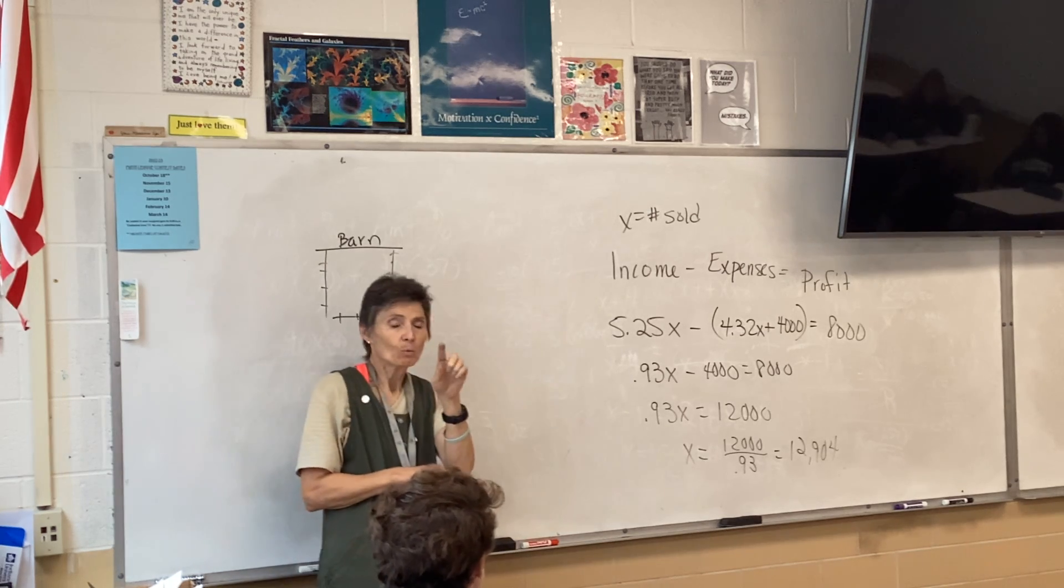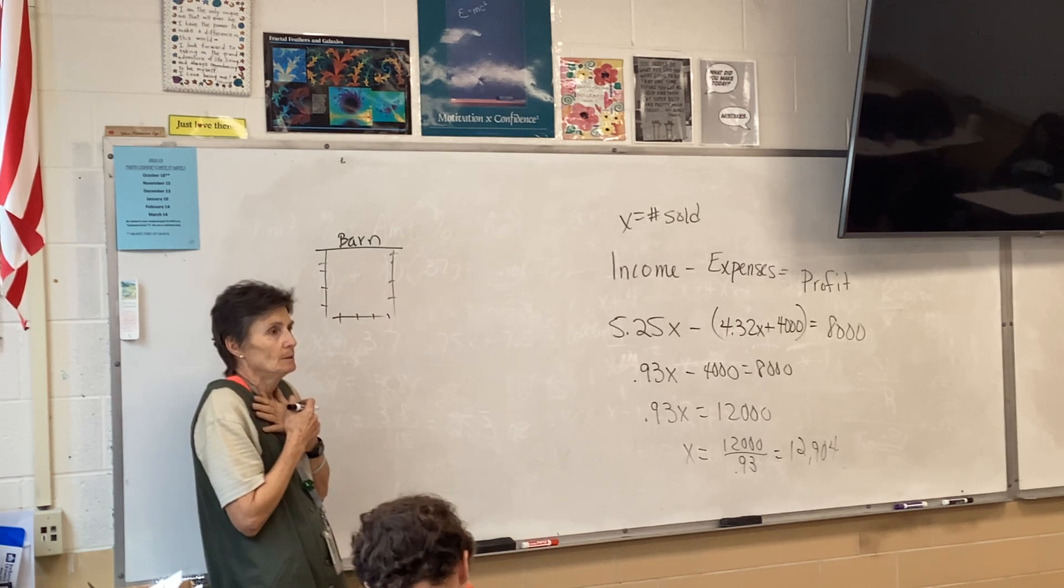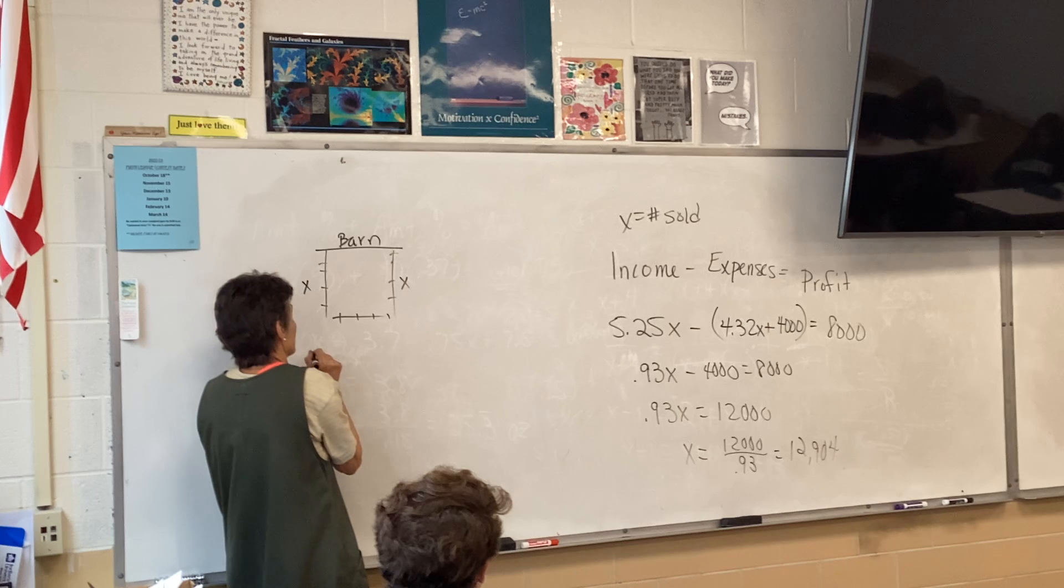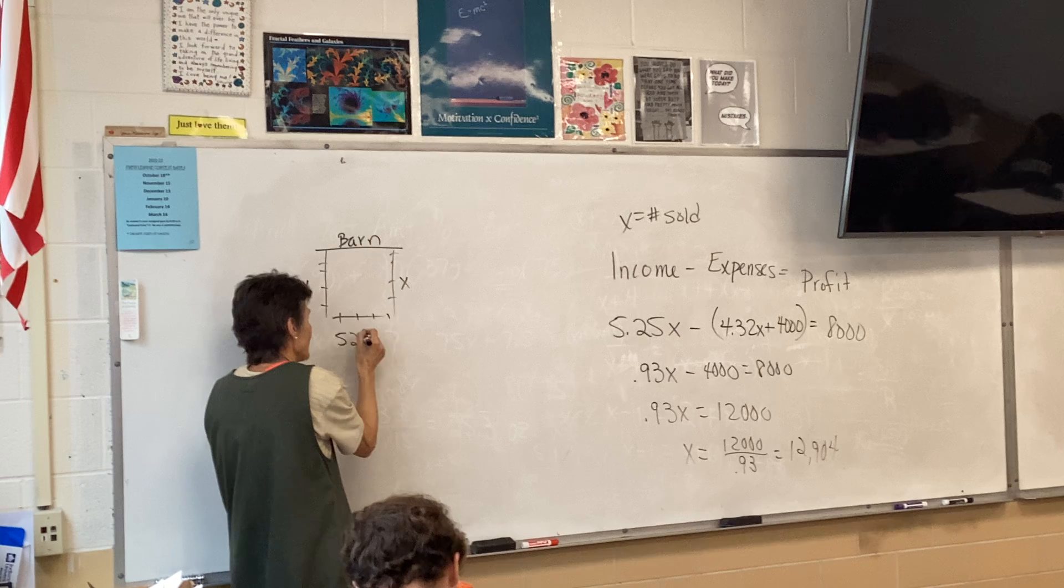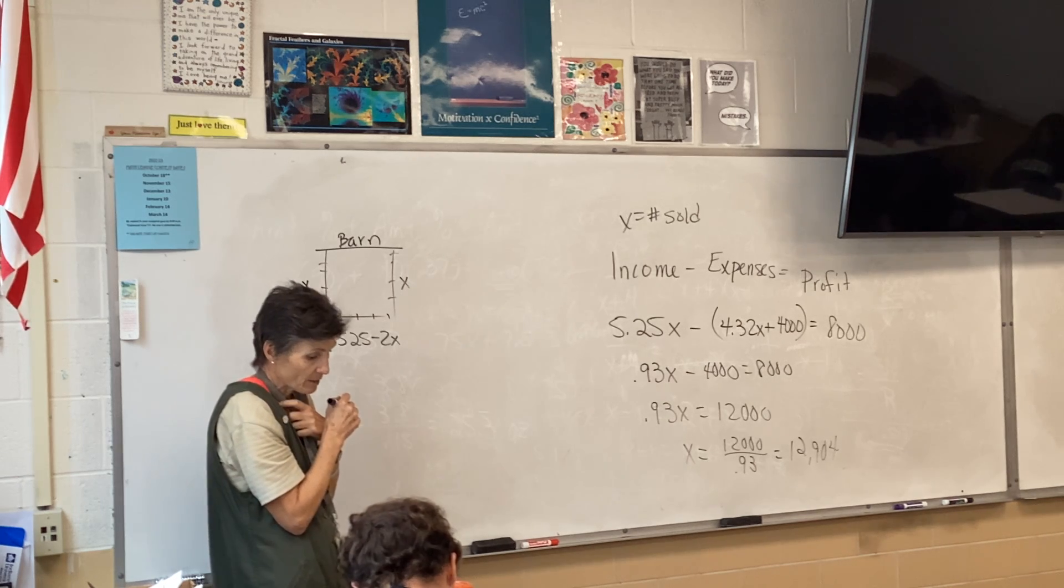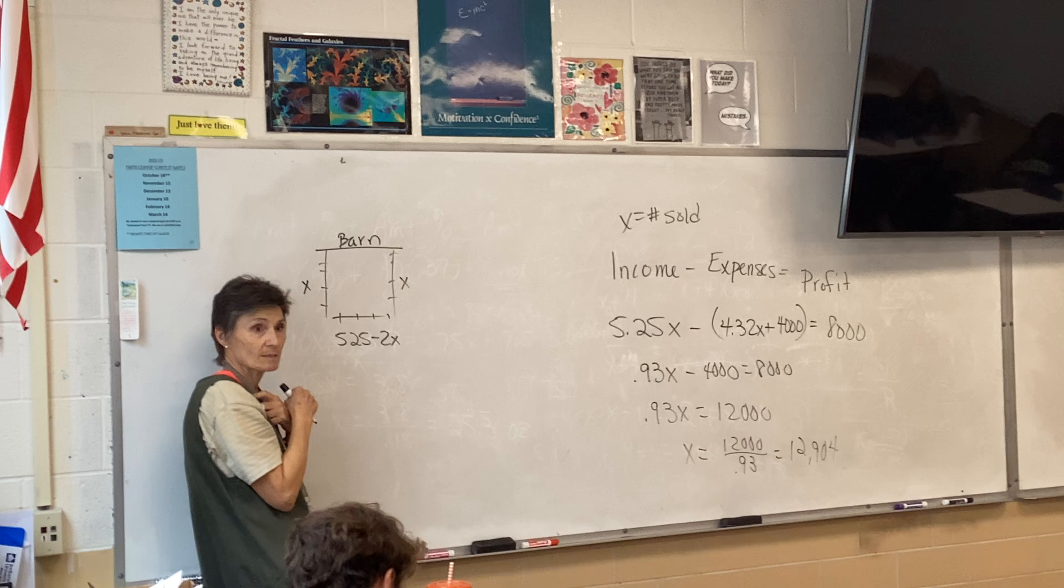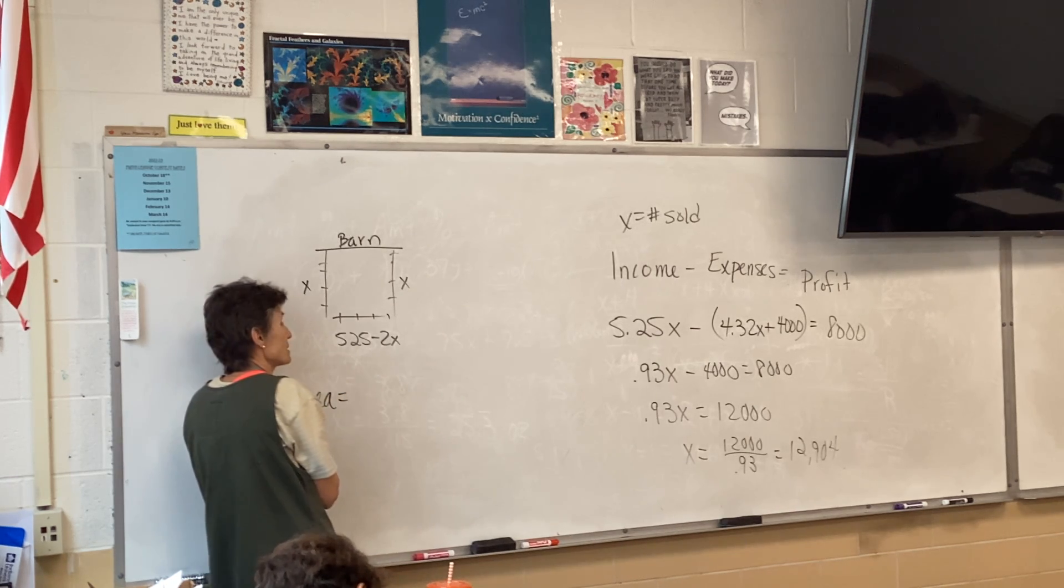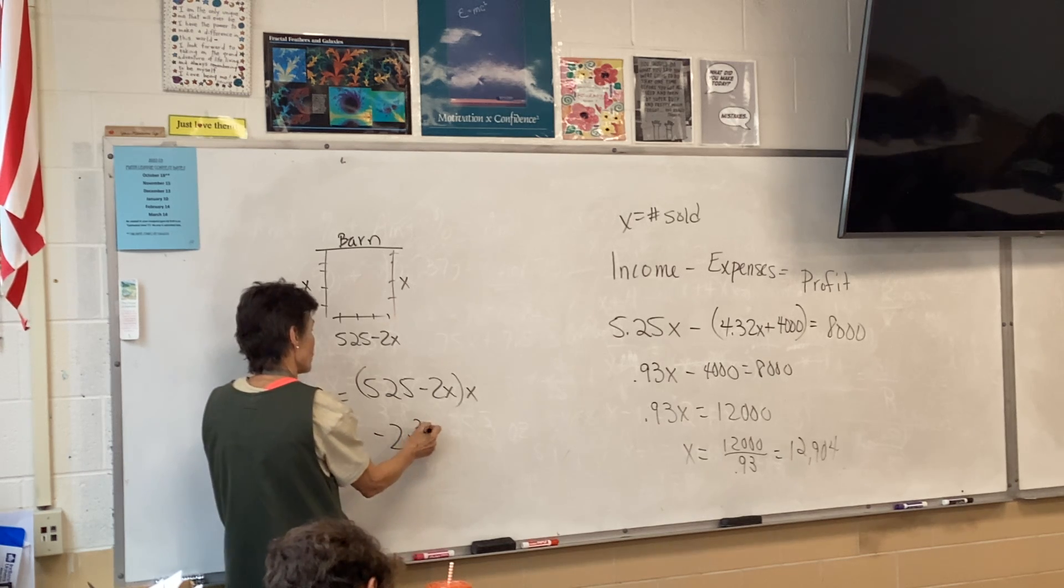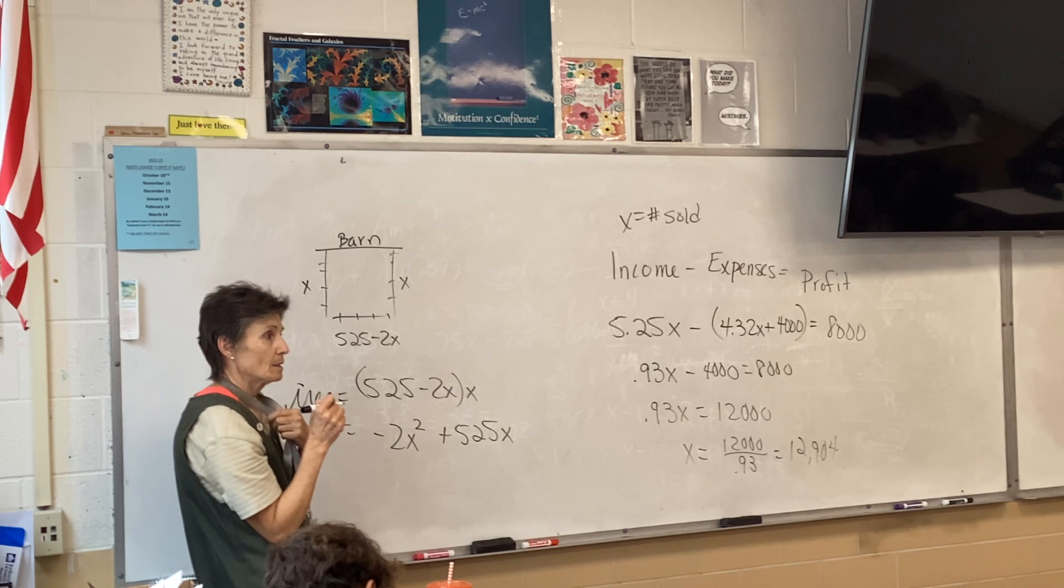If I call this x, what's this? x. What's this? 525 minus 2x. Because I really don't want to have another variable if I don't need it. Would everybody agree if I have 525 feet of fencing? Well, I got an x and an x, and then this would be 525 minus 2x. So what's the area then of this rectangle? Area is length times width. So that's negative 2x squared plus 525x. I distributed it because I want you to see a couple of things. Is that a rectangle? I have a rectangle. Is that a parabola? Yes. And it opens down.